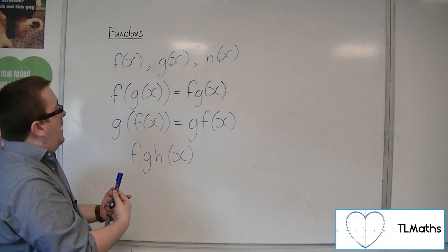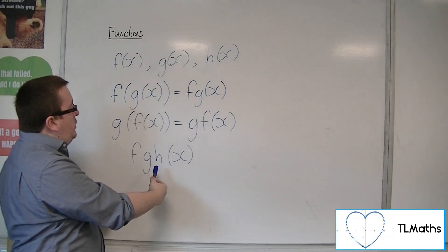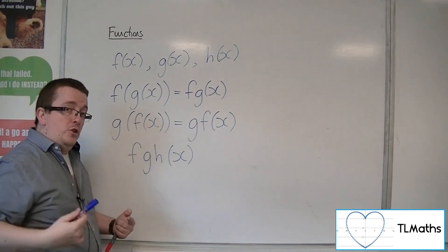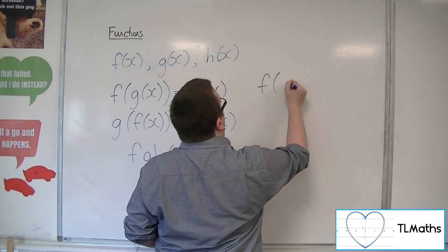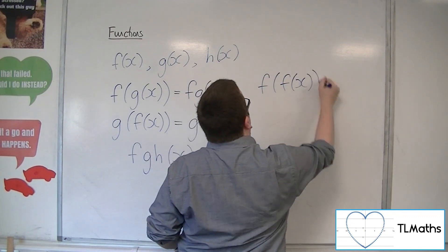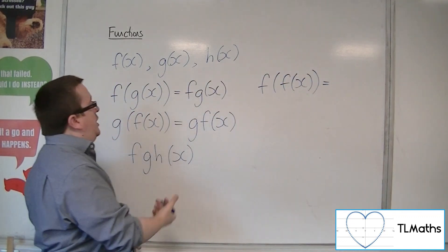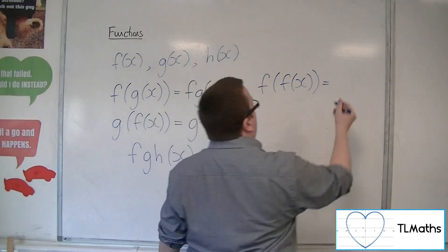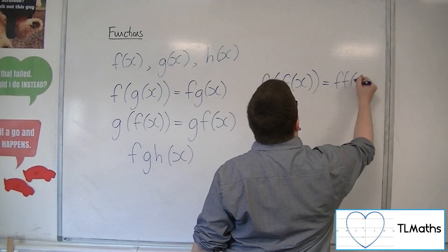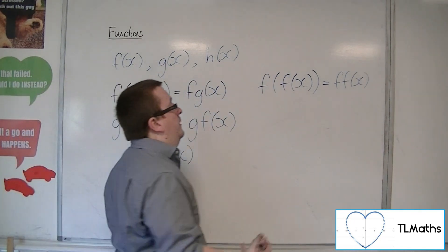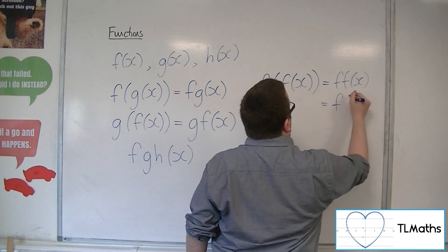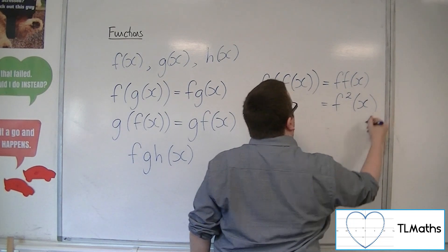Now, we could also put one function into itself. So we could have f of f of x. It makes sense, given the notation that we've used, that we would write that as ff of x, which you can do. It also can be shorthanded to write it as f² of x.